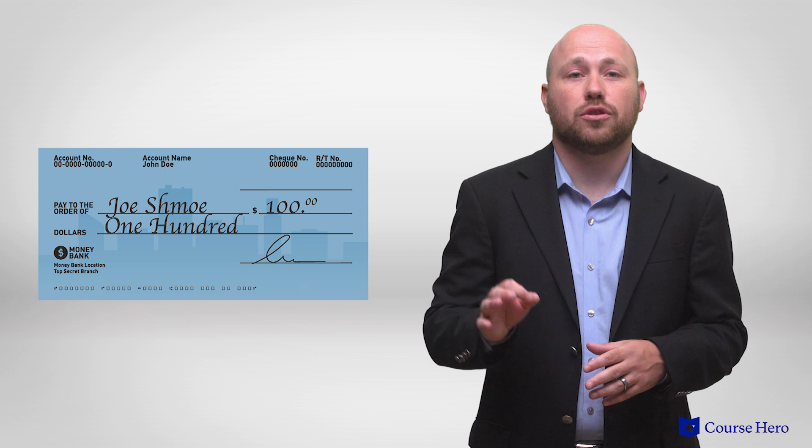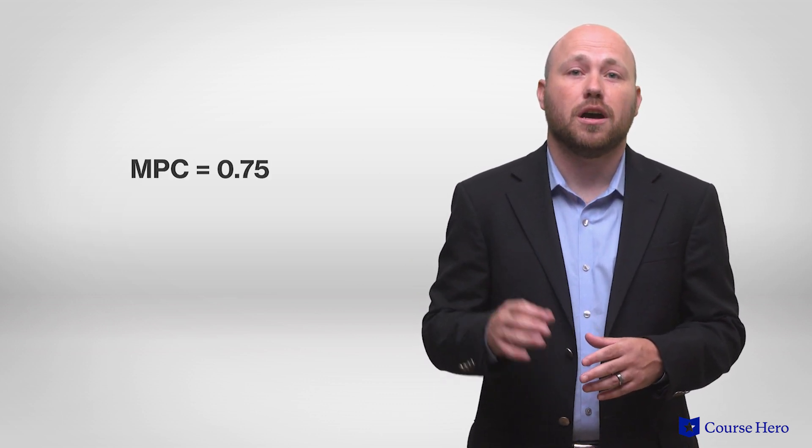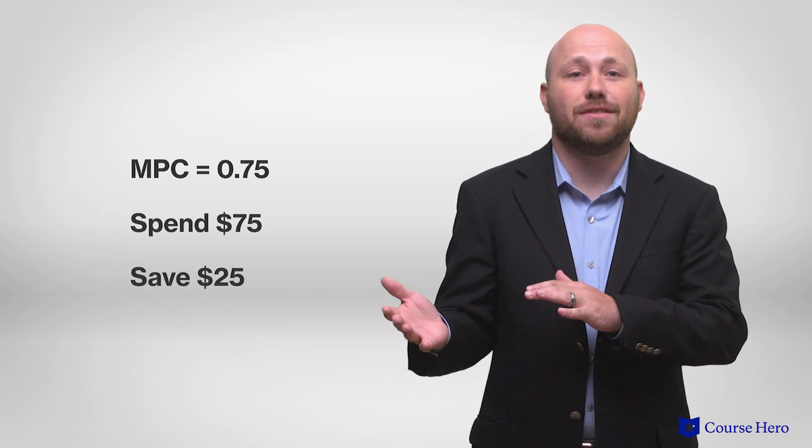Assume a person receives an additional $100 in income. Their only options are to spend it or save that $100. For example, if a consumer has a marginal propensity to consume of 0.75, they would spend $75 and save the other $25.